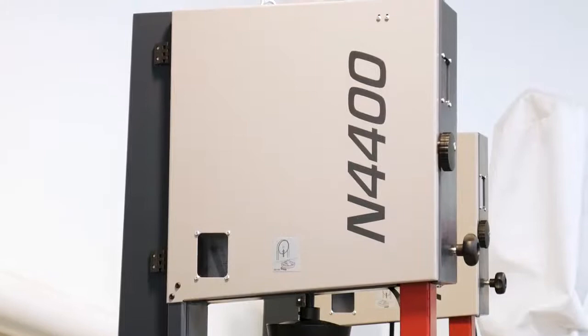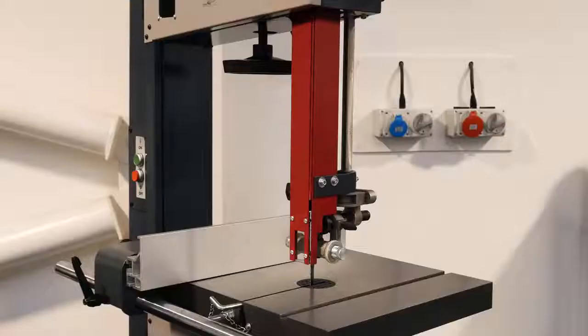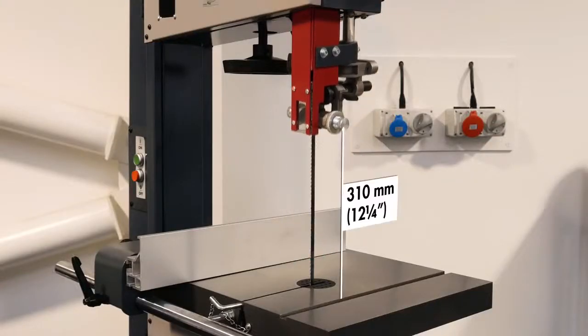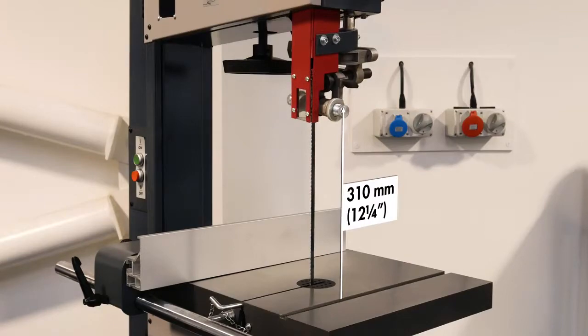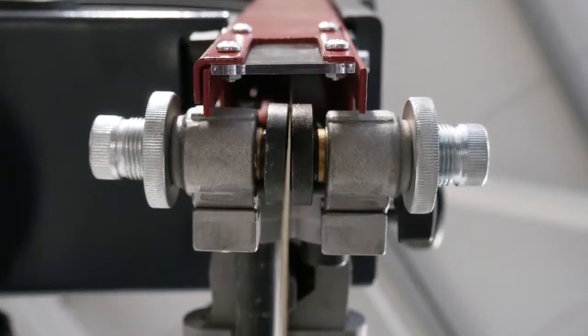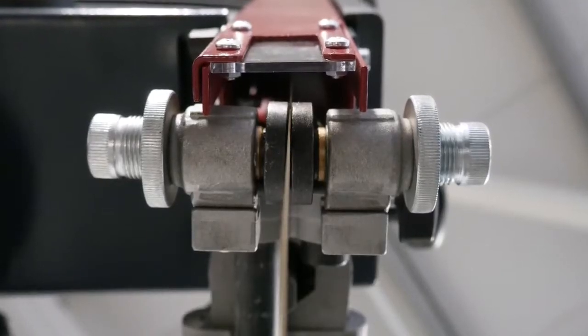The Hammer N4400 has a high cutting height of up to 310mm, which provides great versatility and enables the production of solid wood veneers as well as a range of other applications.